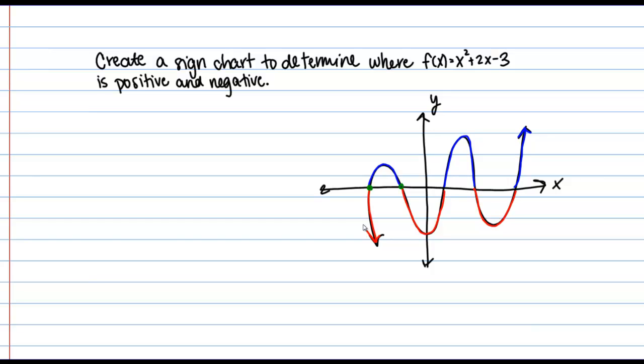So the important thing to realize here is that a function changes from positive to negative, or vice versa, at its zeros, or at its x-intercepts. A function has to pass over the x-axis to change from positive to negative. So we're going to use that idea to help us create our sign chart.